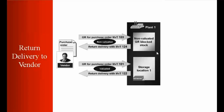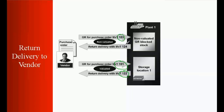When you do the return delivery, against every standard movement you have a corresponding return delivery movement type. For example, if you're using movement type 101, the return delivery for that will be 122. You don't need to remember anything — the system will automatically pick the return delivery movement type when you do the posting. If the original movement type was 103, then the return delivery will be 124.